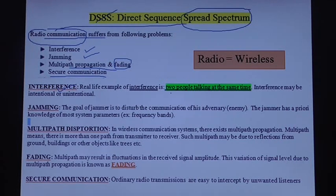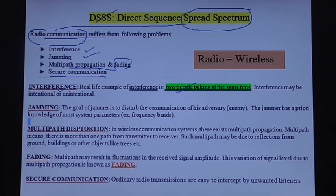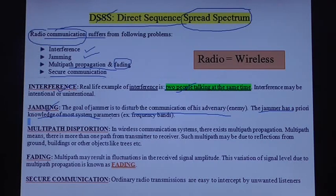An interference example is two people talking at the same time, or when one person is talking and another person is talking loudly with the intention to disturb the communication. Another problem is the jammer. The goal of a jammer is to disturb the communication of his adversary. The jammer has a priori knowledge of most communication system parameters, for example frequency bands.